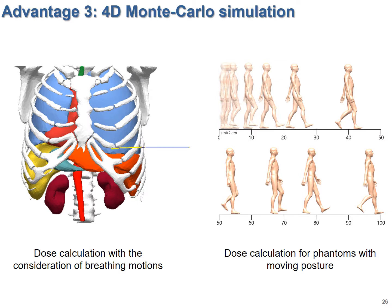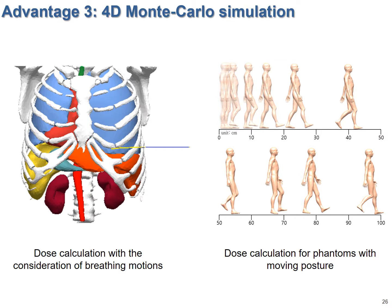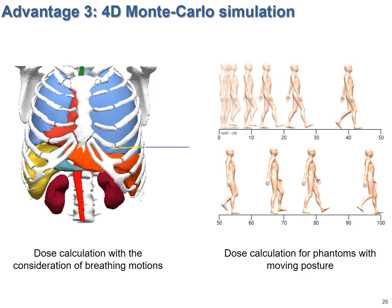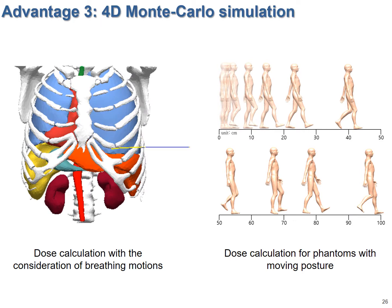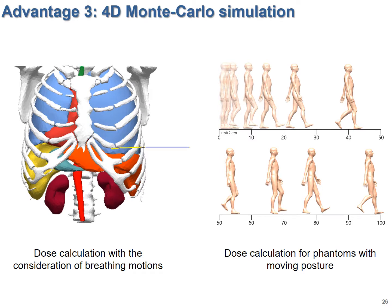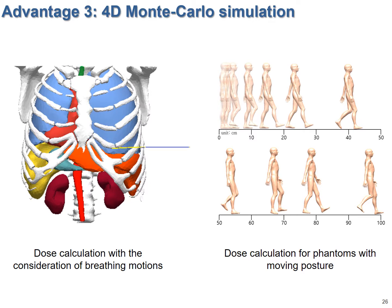The third advantage of Geant4 is its capability of 4D Monte Carlo simulation. By using parameterized geometry, we can calculate doses for moving phantoms such as breathing phantoms or walking phantoms.